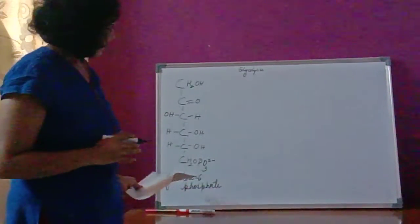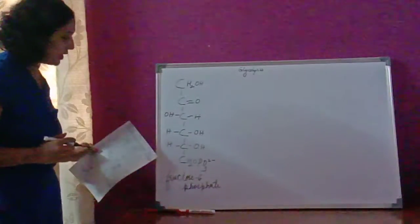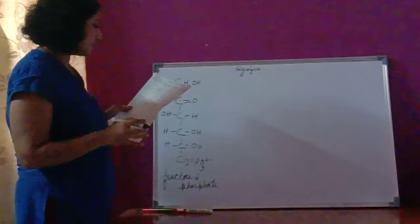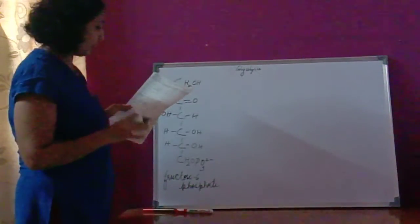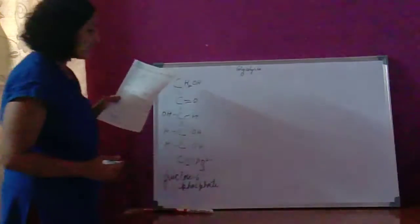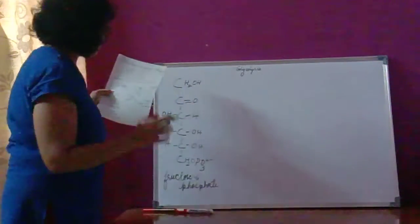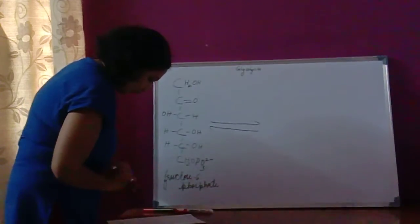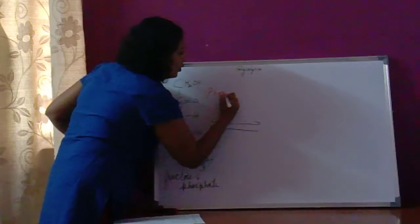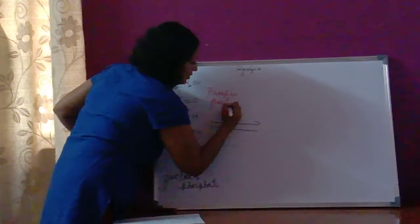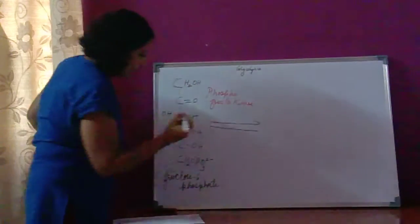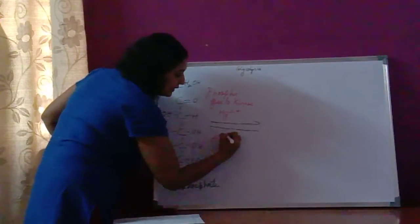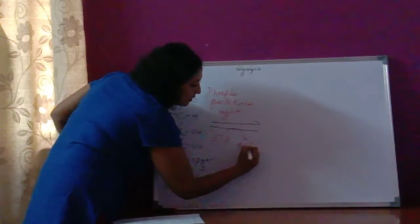In my previous video, I had done till fructose 6-phosphate. This is the structural diagram of fructose 6-phosphate. Next, what happens is that the kinase enzyme — phosphofructokinase — converts fructose 6-phosphate to fructose 1,6-bisphosphate. This is a two-way reaction, and the enzyme involved is phosphofructokinase. Wherever a kinase enzyme is involved, there is the presence of Mg2+ ion, and ATP gets converted to ADP plus Pi.